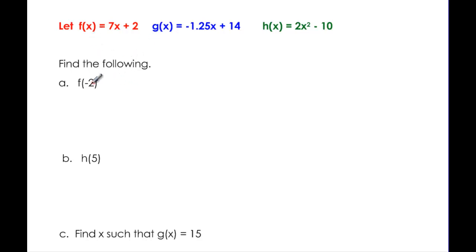So we have f(x) = 7x + 2, and part A is asking us for f(-2). So we want the f function, and wherever we see x, we're going to replace it with -2. So 7 times -2 plus 2. 7 times -2 is -14 + 2, which will mean that this f(-2) is actually equal to -12.